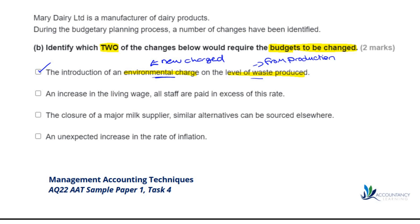Number two: an increase in the living wage, but all staff are paid in excess of this rate. This isn't going to affect our budget because staff are already paid above the living wage — if the living wage goes from five to six pounds but staff are paid seven, that change doesn't affect the business. Number three: the closure of a major milk supplier, but similar alternatives can be sourced elsewhere. Since there are similar alternatives available, we can source from elsewhere, so there won't be any significant change to the budget.